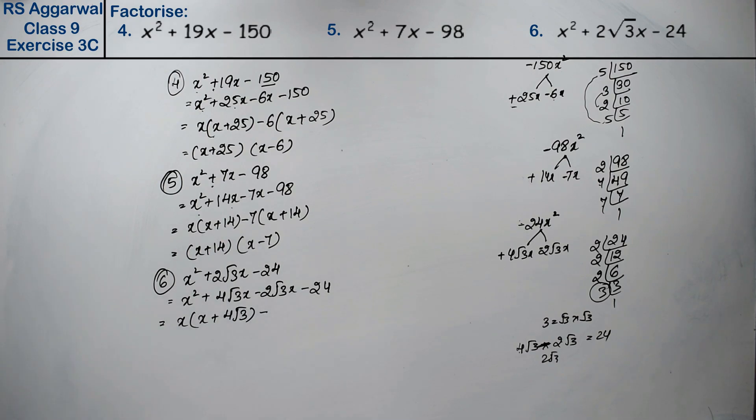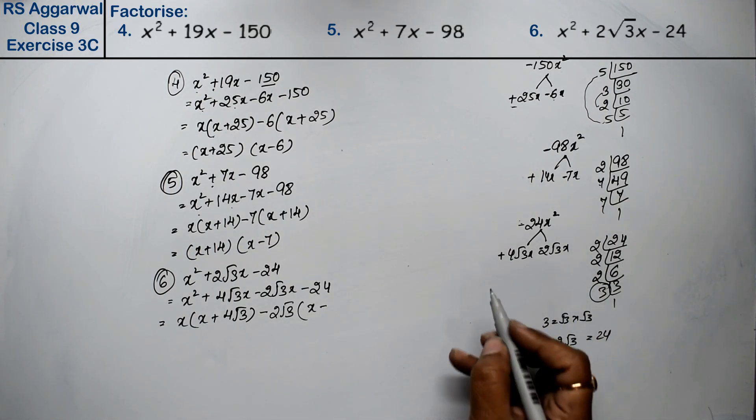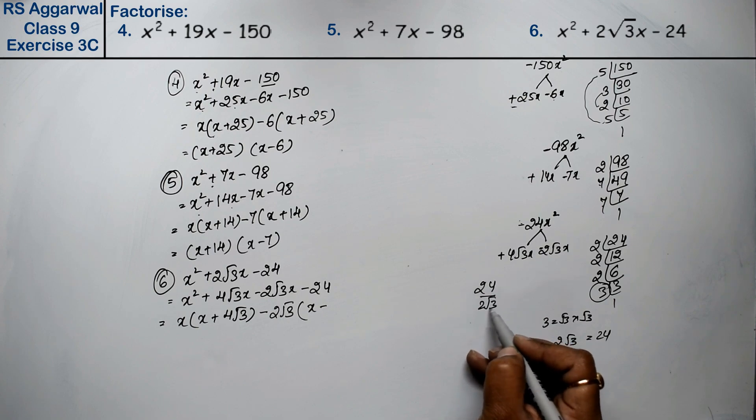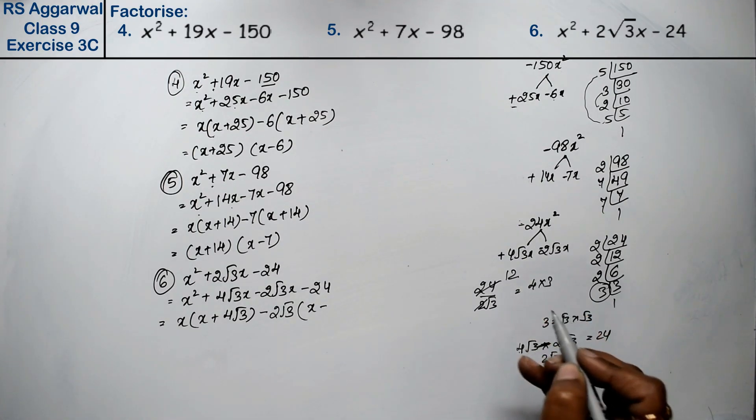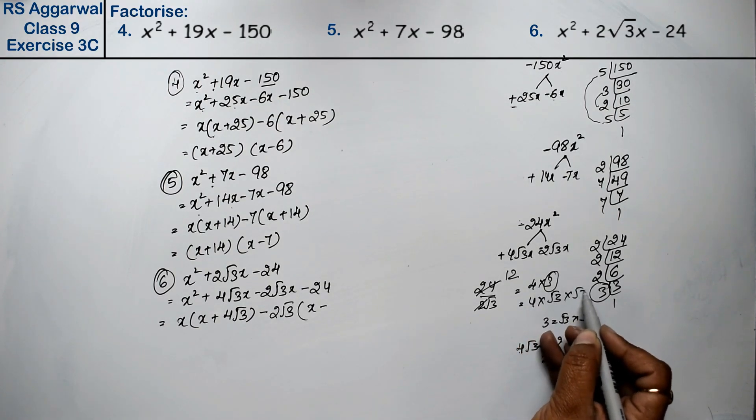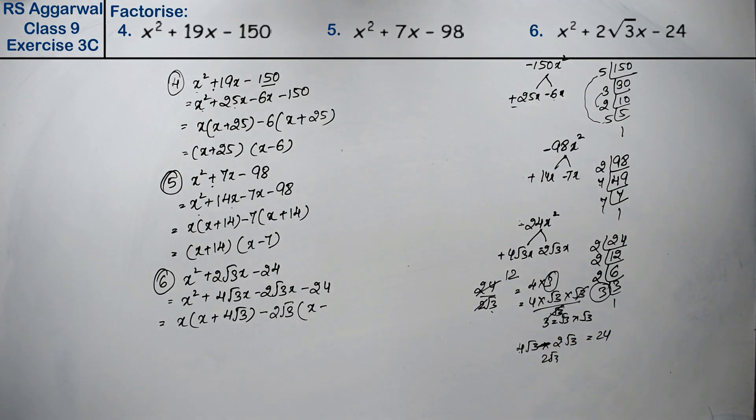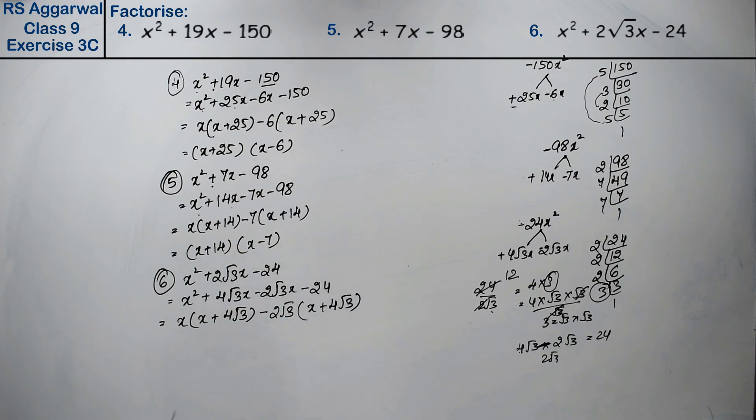So if we make them, last 2 root 3, what will that be? x minus 24. We divide 24 by 2 root 3. What do we do with 2? 12. What can we do with 12? 4 into 3. Now what can I do with 3? 4 into root 3 into root 3 upon this root 3. So root 3 is cut. What do we get? x plus 4 root 3. Because we have minus common, we have plus. Now the same has come, so x plus 4 root 3 has come. The answer is x minus 2 root 3.